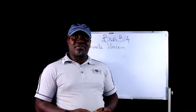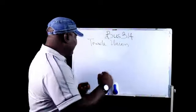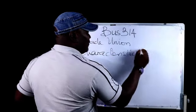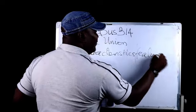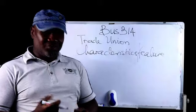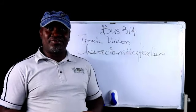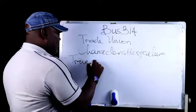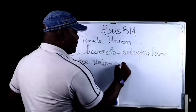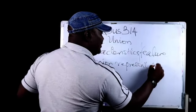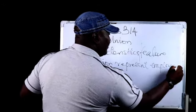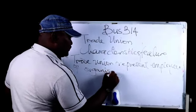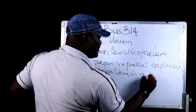Now what are the things we need to look out for in a trade union? There are certain characteristics or features that you look out for that will make you understand that an association or an organization is a trade union. The first one is it represents employees of organizations in a particular industry.